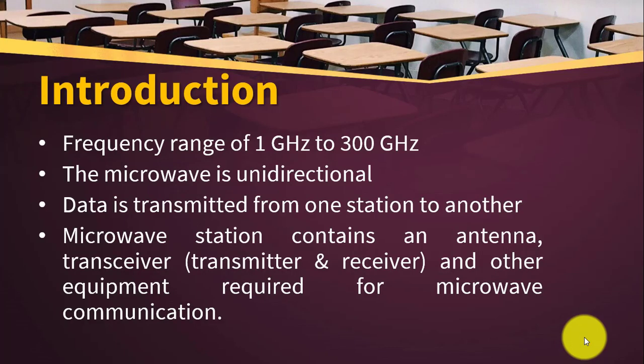First, let's discuss microwave transmission. What is a microwave signal? The signal having a frequency range of 1 GHz to 300 GHz is called a microwave signal. The direction of transmission is always unidirectional — it is always a one-way direction. For transmitting microwave data, we use microwave stations, and each microwave station has an antenna or transceiver — a transmitter and receiver — along with equipment required for communication purposes.